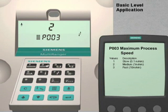Parameter number 3 is used to match the response time of the multi-ranger to the rate of level change within the vessel. The factory default is 2 for a medium rate of change. We will leave this parameter set to the factory default.